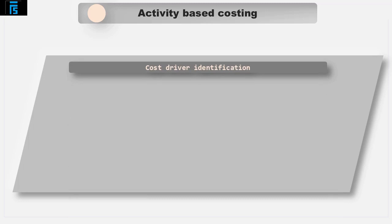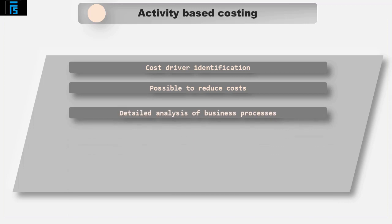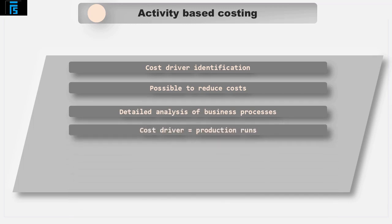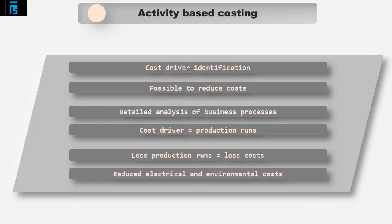Activity Based Costing, by identifying cost drivers, helps us to understand how costs arise, and so the company can focus on reducing these costs. Activity Based Costing principles can be used to identify drivers for environmental costs through a detailed analysis of business processes. For example, if it could be ascertained that the number of production runs was the dominant cost driver of a company's electrical costs, then the company could focus on reducing that number of production runs, thus reducing the electrical or environmental cost.